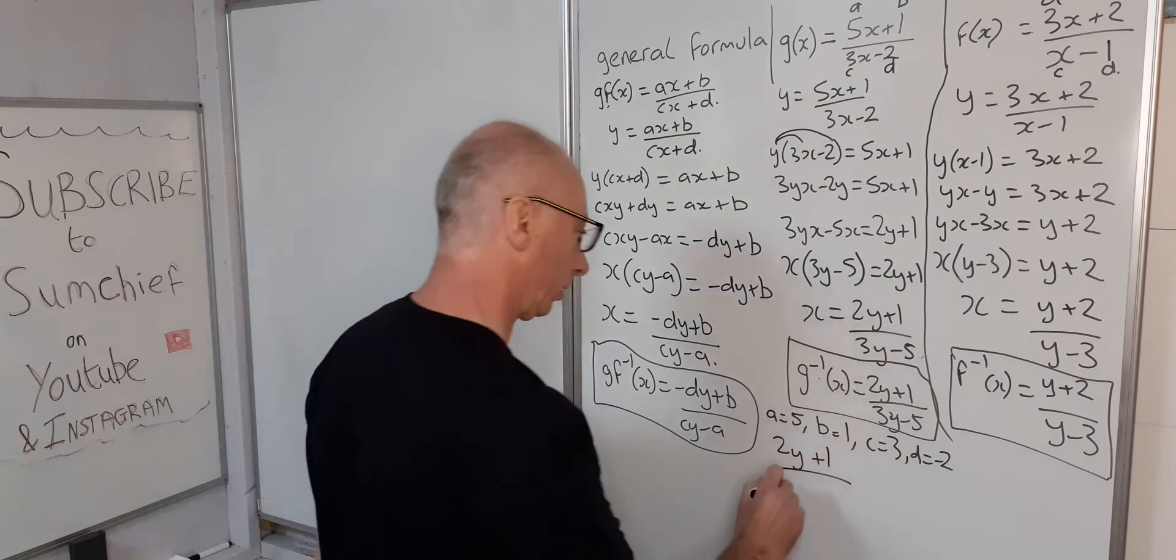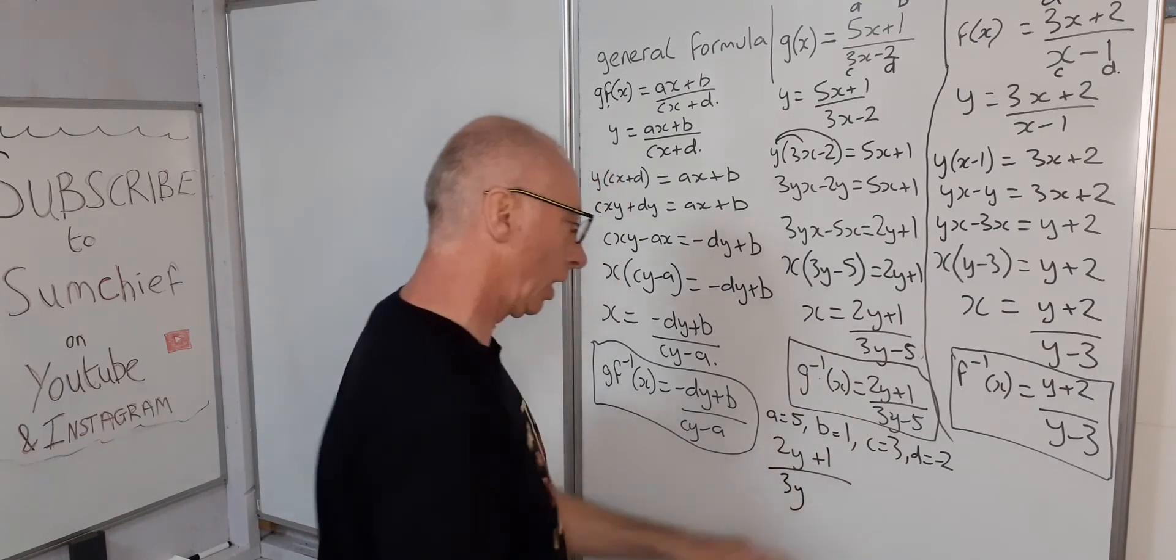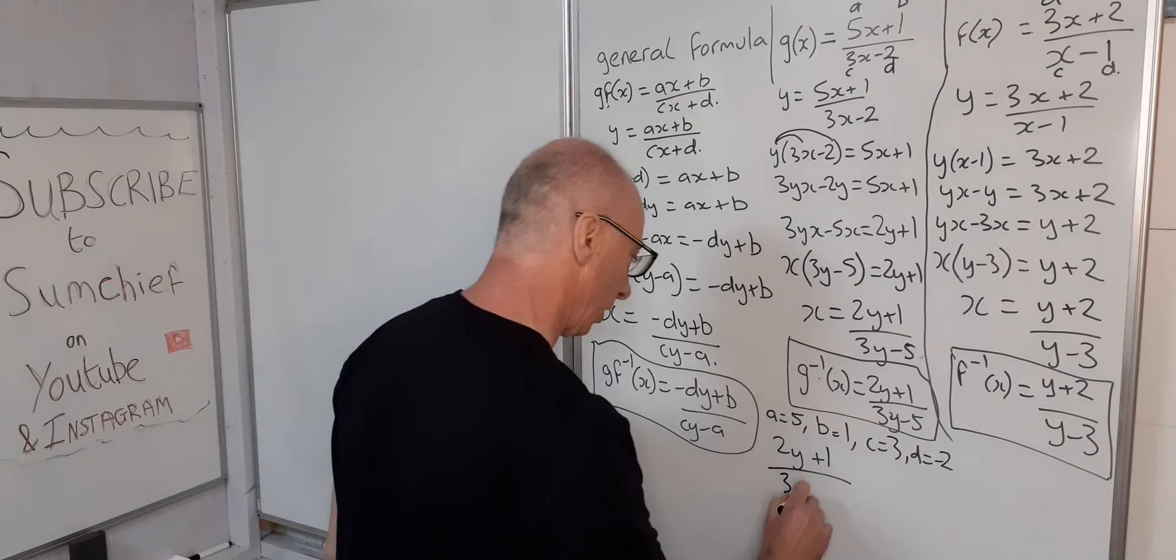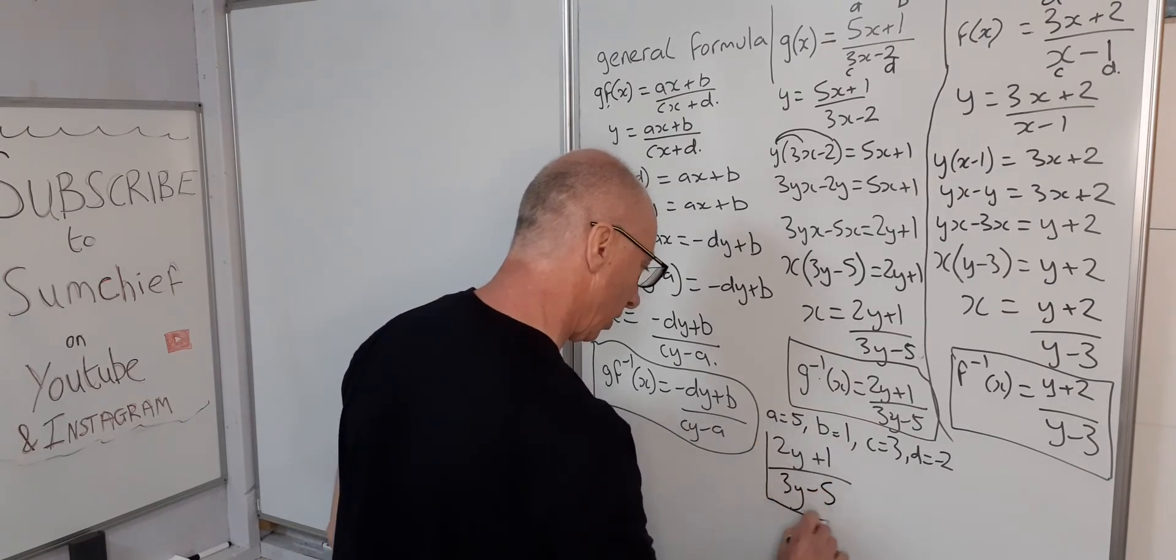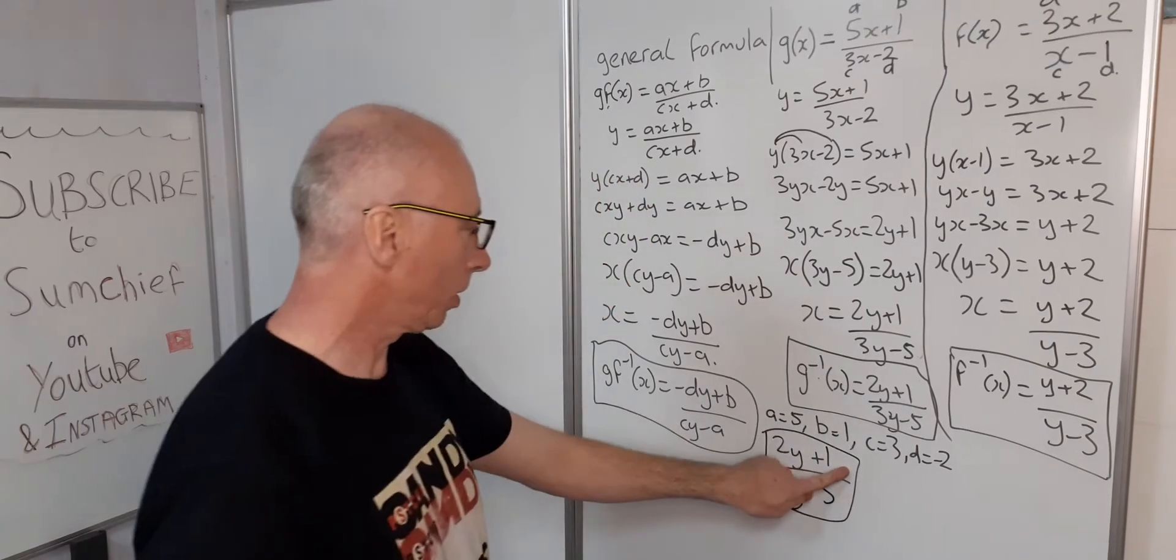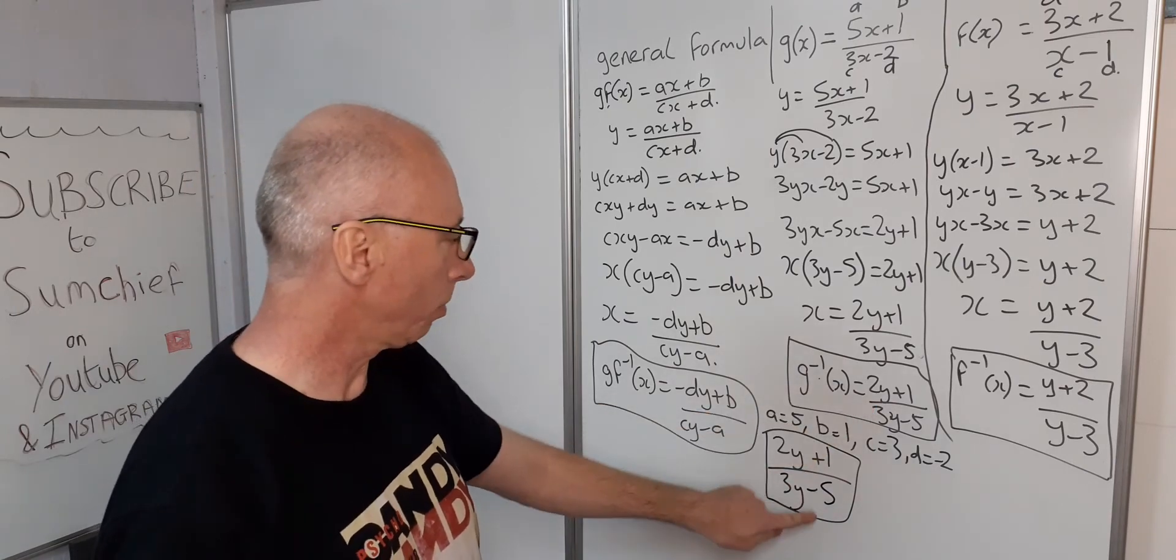So minus d times y, so minus minus two is 2y plus b which is one, over cy so that's 3y, and minus a so that's minus five. So that's using our formula, and as we can see, it's in the same format as this one.